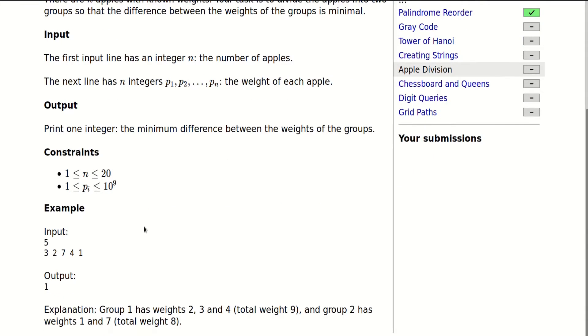We are given an example here. N is equal to 5, so there are 5 apples, and the optimal assignment to groups gives us a difference of 1. This can be achieved by assigning apples 3, 2, and 4 to group 1, so that group 1 has total weight 9.